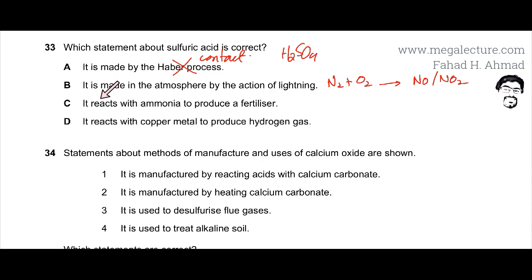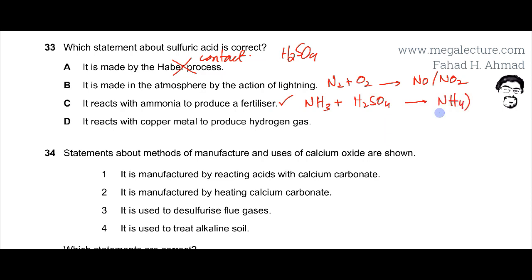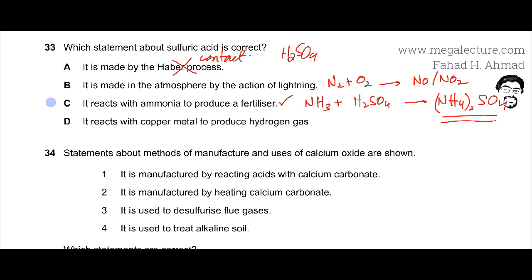The next option is that it reacts with ammonia to produce fertilizers. This is correct. A lot of fertilizers are produced when ammonia and sulfuric acid react, producing ammonium sulfate, which is a salt used as a fertilizer. So option C is the correct statement.